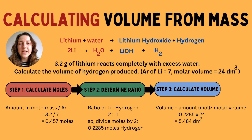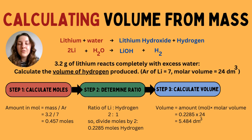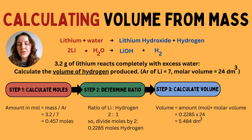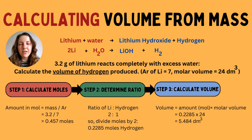Step one is to calculate the number of moles. Moles equals mass divided by relative atomic mass. So we do 3.2 grams divided by 7, giving an answer of 0.457 (with more decimal places). You can keep that full number in your calculator to avoid rounding errors — you don't have to write every decimal place.